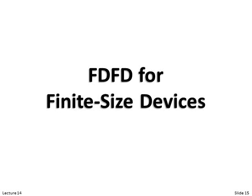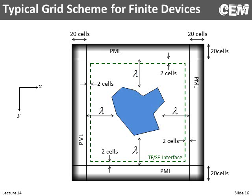What about finite sized devices that are not periodic? We really know all the same rules — there's just a little difference. Now we have a PML going all the way around, our device is still in the middle with about a wavelength separating it from the PML. We now have a total field scatter field region that forms a box, just outside the PML slightly, allowing us to record scattered fields between the interface and the PML. I still like to keep my PMLs about 20 cells. We just don't have those periodic boundaries on the left and right anymore.